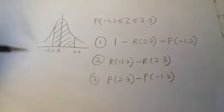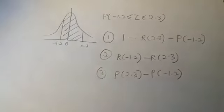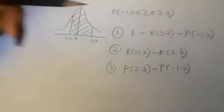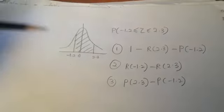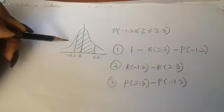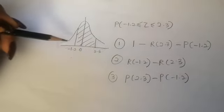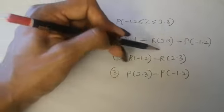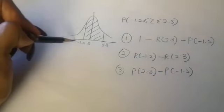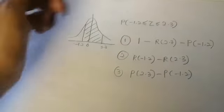The first way: total probability must be 1, so 1 minus what I don't want. I don't need the right of 2.3, and I don't need the left of negative 1.2. So it's 1 minus the right of 2.3 minus P the left of negative 1.2.